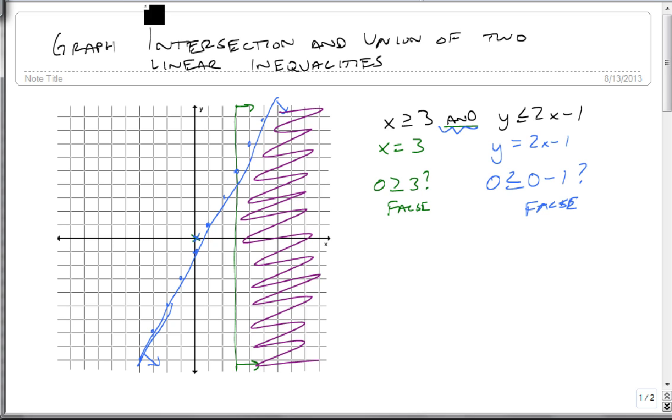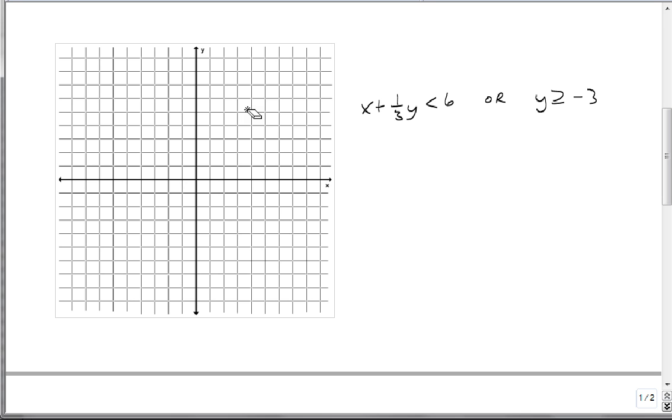We don't shade this region because only the green line wants it, and we don't shade here because only the blue line wants it. The purple is our answer. That works for an 'and', which we'll do most often. But what about an 'or'? Suppose we have x plus 1/3 y is less than 6 or y is greater than or equal to minus 3.